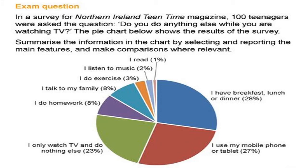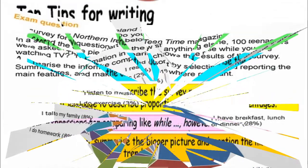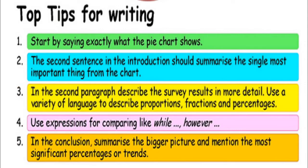Two percent of them listen to music while watching TV, and 3% do exercise. Eight percent of the teenagers talk to their family members while watching TV, and 8% do homework. Twenty-three percent of the teenagers watch TV and do nothing else. Twenty-eight percent have breakfast, lunch, or dinner while watching TV, and 27% use a mobile phone or tablet.